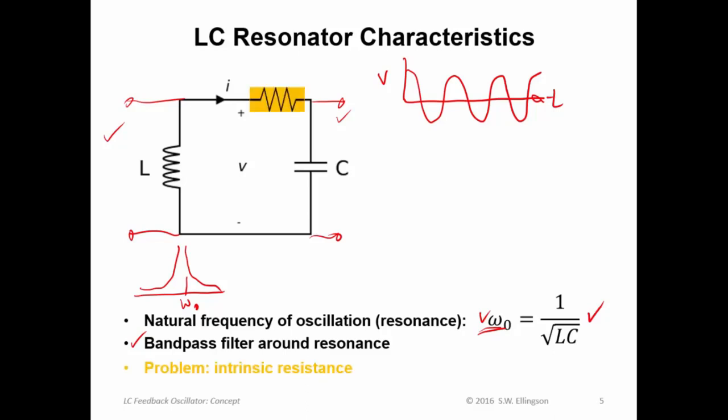In any event the problem with using this as is is intrinsic resistance. In practice the inductor will have some resistance, the capacitor will have some resistance, there'll be some resistance in the thing that's connecting them and I'll model that resistance here. And of course what that means is that we will not have this, we will have something that looks more like this. We'll have a damped response. So each subsequent iteration will not come back to the original voltage. Instead we'll just keep dropping until eventually all the energy is dissipated. So obviously we're going to have to come up with some way to overcome this intrinsic resistance if we want a nice steady signal.